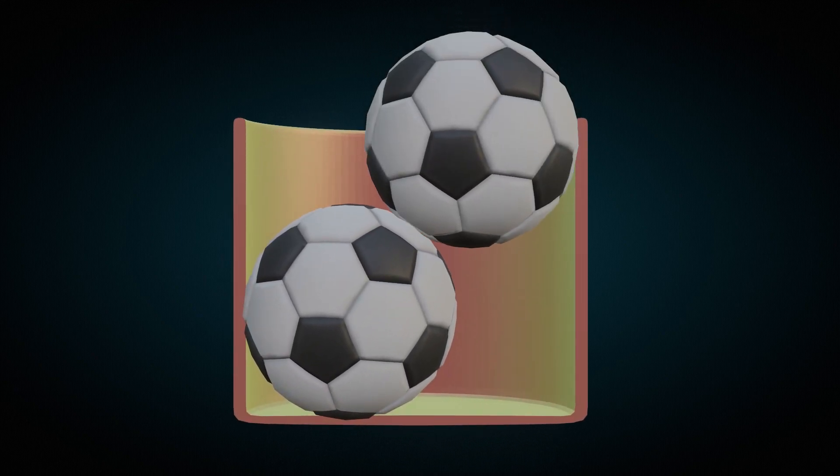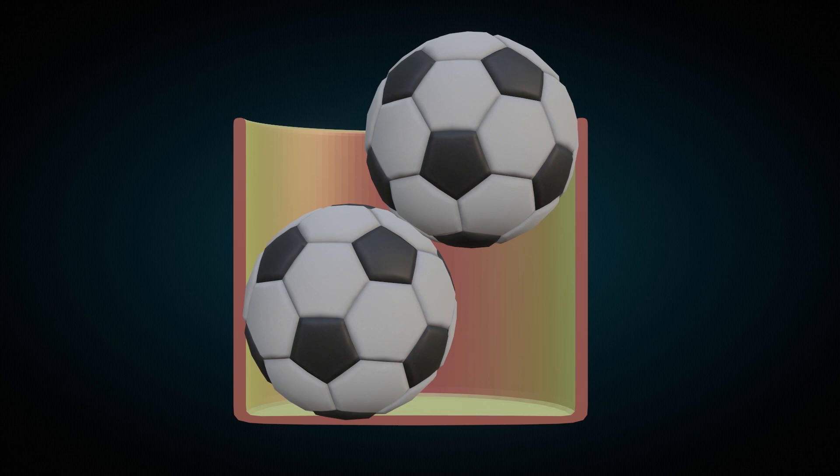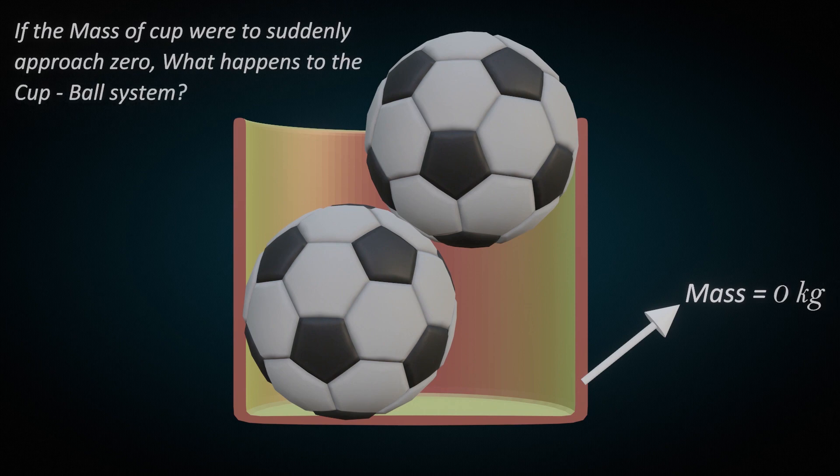Let's put a couple of footballs in a massive cylindrical cup. The arrangement is stable. Now, if the mass of the cup were to suddenly approach zero, what happens to the cup-ball system?